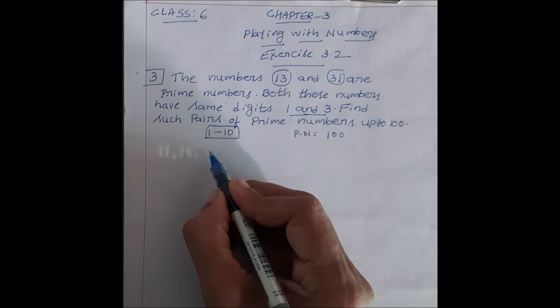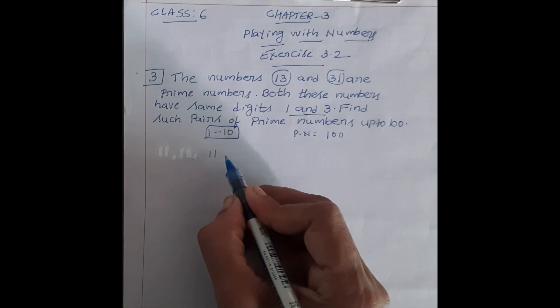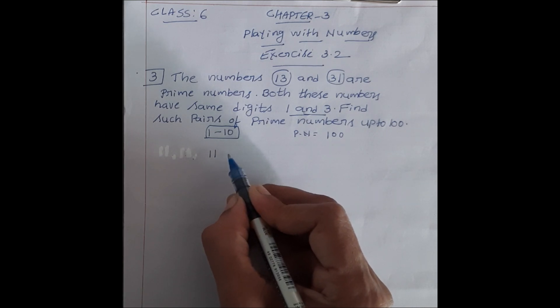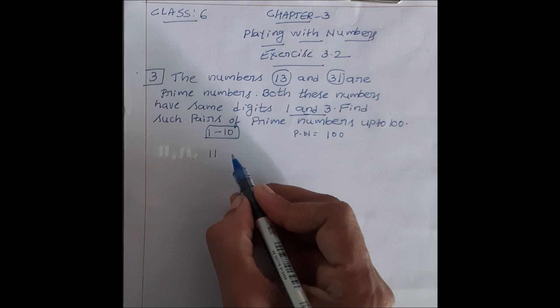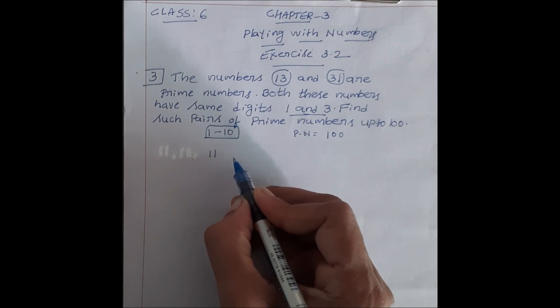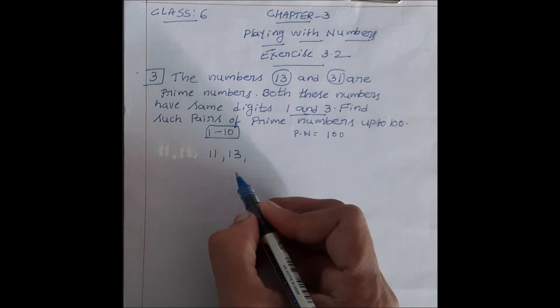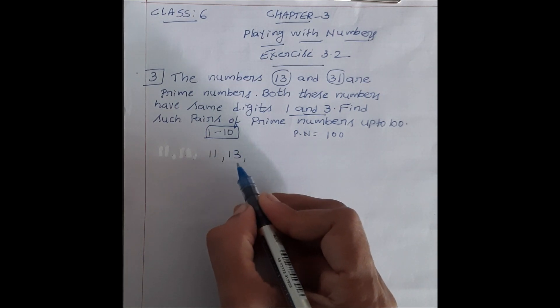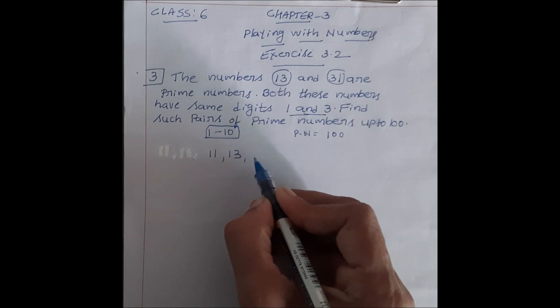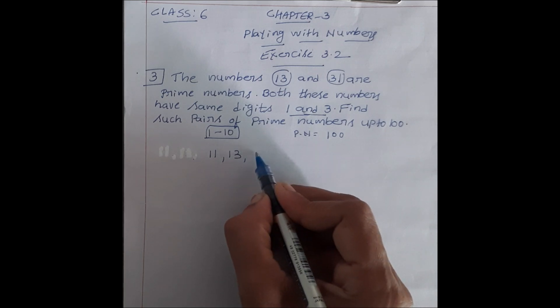Abhi 11 prime number hai, 12 prime number nahi hai kyunki more than 2 factors hai, means 12 number jo hai na, 2 table se zyada table mein jaati hai. For example, 1 table mein, 2 table mein, 3 table mein, 4 table mein, 6 table mein, 12 table mein. Iska 12 likhne ka zaroorat nahi hai. 13 prime number hai, kyunki iska 2 factor se 2 table mein jaati hai. 14 prime number nahi hai, 15 bhi prime number nahi hai, 16 bhi nahi hai, next 17 hai.